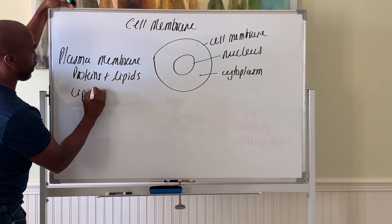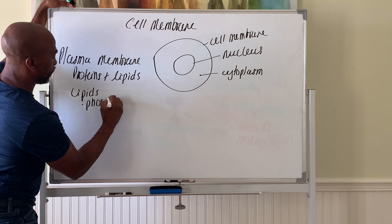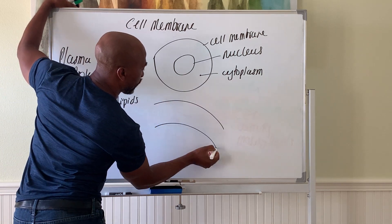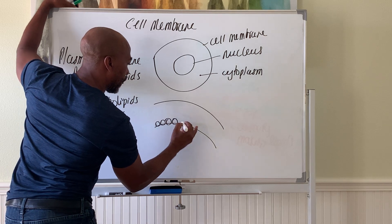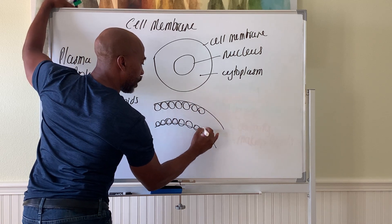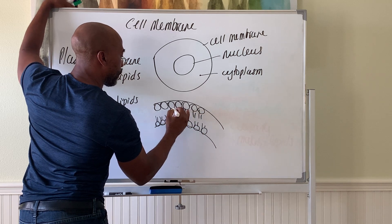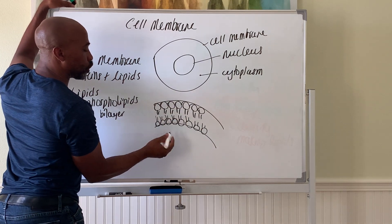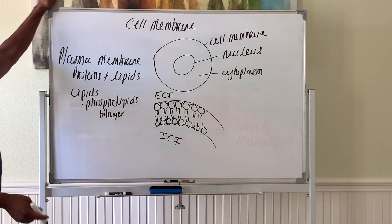Lipids in the cell membrane come in two main types. The first type is phospholipids. The phospholipids of the cell membrane form what we call a bilayer — a double layer. The phosphate group is the head, and then you have your fatty acid tails. They form a bilayer such that the hydrophobic tails are hidden from water, while the phosphate groups are exposed to both the intracellular fluid and the extracellular fluid.